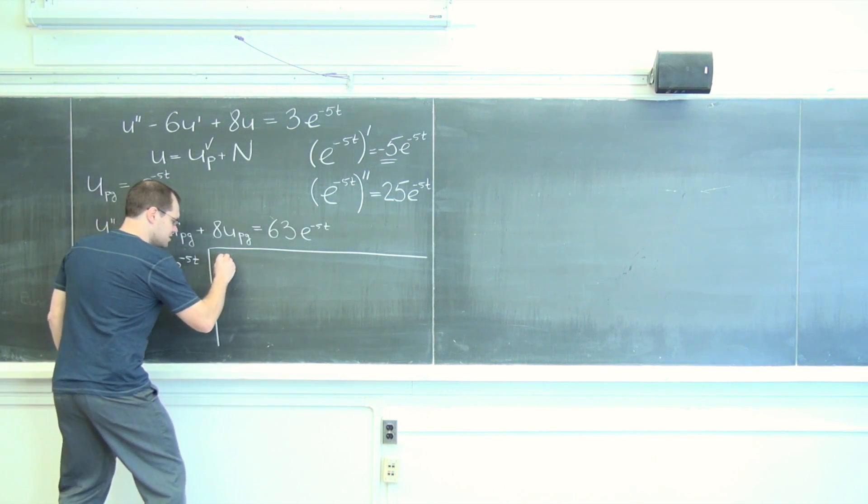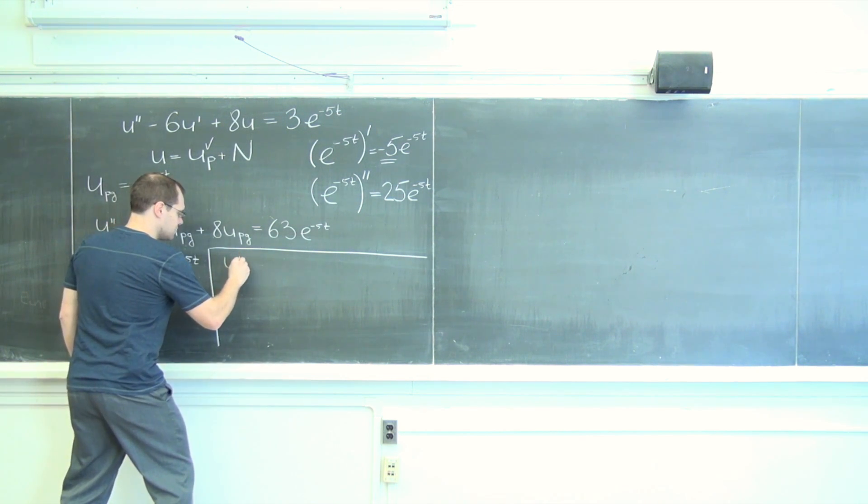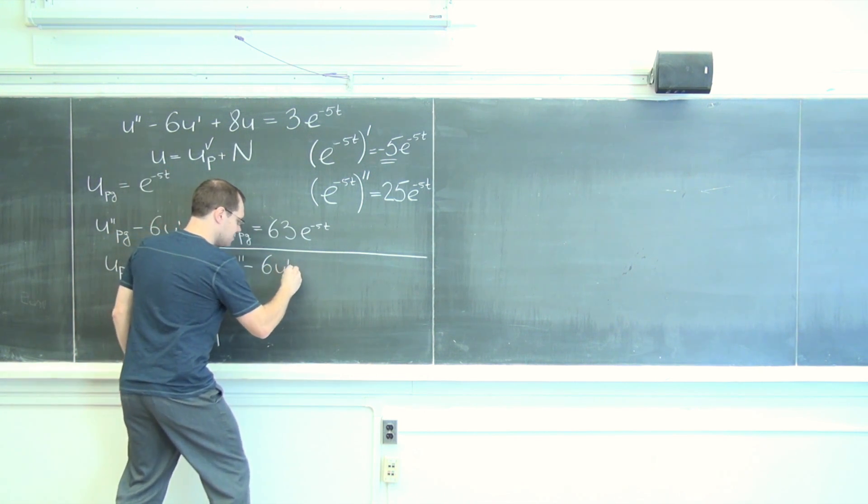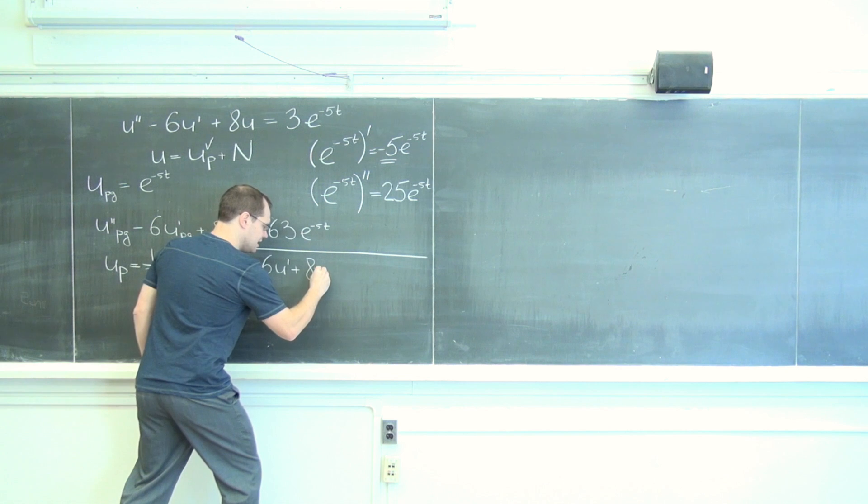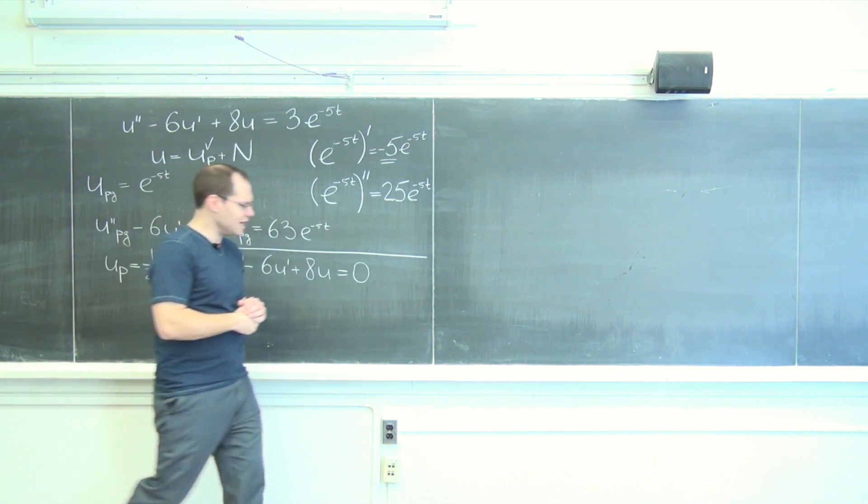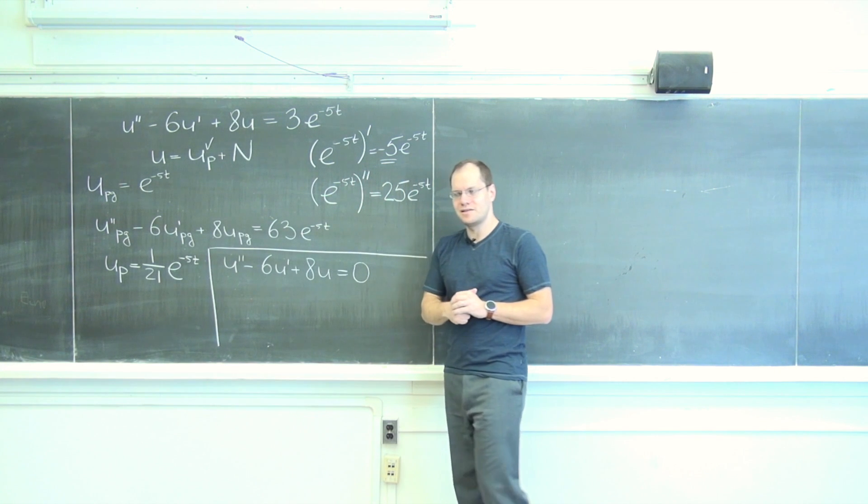So we're really solving this equation: u'' - 6u' + 8u = 0. That's the equation we need to solve to find the null space.